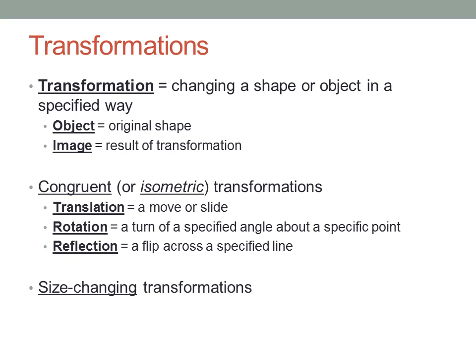The congruent transformations are translation, which is a move or a slide, rotation and reflection. We'll look at each of these in turn in a moment. And changing the size by a specified factor is called enlargement or reduction.